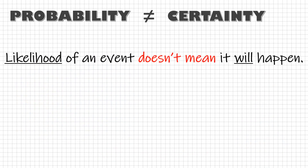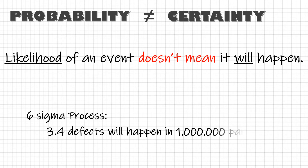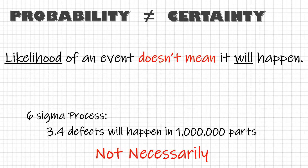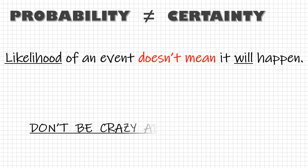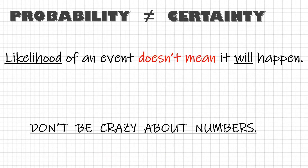Similarly, a six sigma process does not mean that exactly 3.4 defects will come in one million parts. The idea here is: do not be fixated on the numbers. It's just an estimate of how good the process is.